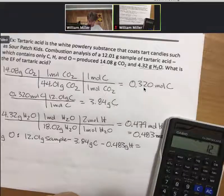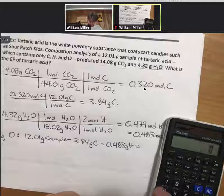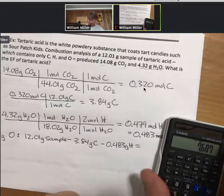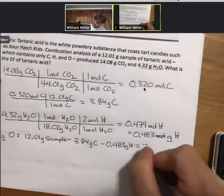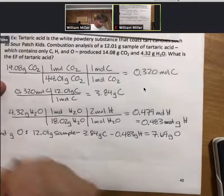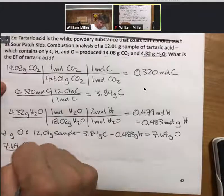12.01 minus 3.84 minus 0.483, let's say 7.69 grams of oxygen. Anytime you have grams of anything, turn it into moles, and that is also true here.